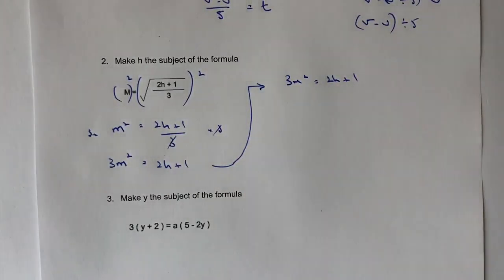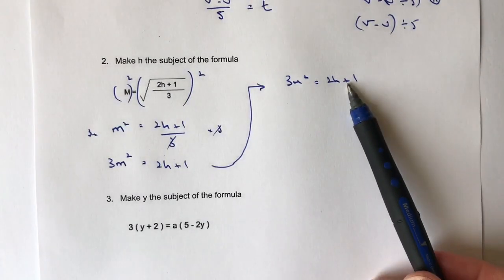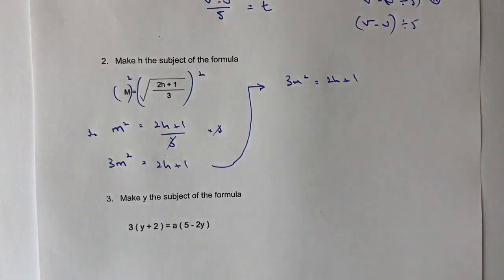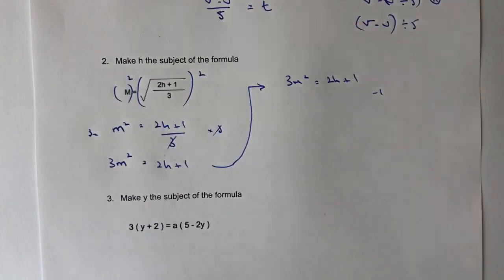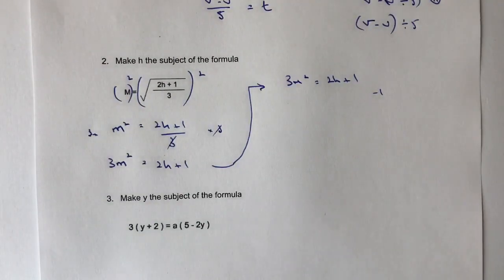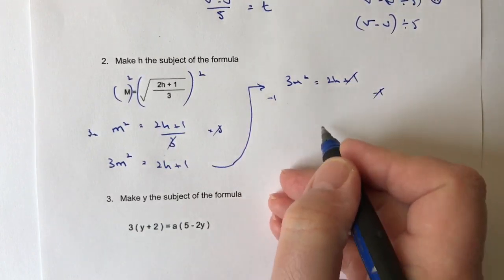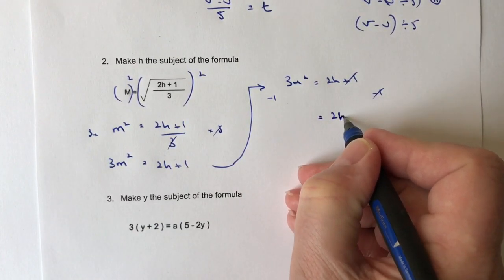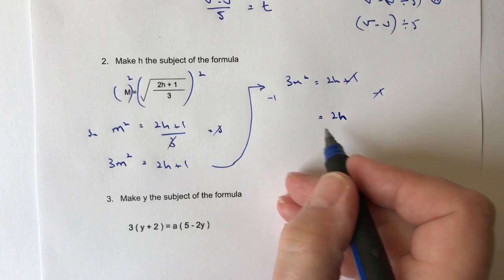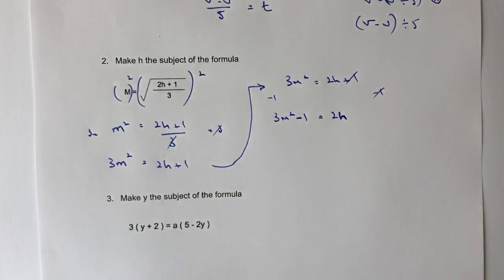All right, so I mentioned before I've got to get h on its own, and what's getting in the way now is this plus 1. So I need to get rid of it by minusing it, but I've got to do it to both sides of the equation. If I minus 1 from both sides, on the right-hand side, I get 2h, which is great because it's getting closer to h on its own. On the left-hand side, I get 3m squared minus 1.